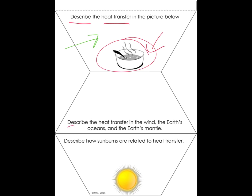This next part says, describe the heat transfer in the wind, the oceans, and the mantle. So remember, all of these are fluids, and one of our heat transfers deals with fluids, with things that move easily. So you're going to write down whether it's conduction, convection, or radiation here, and describe how you know that.